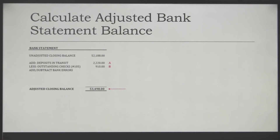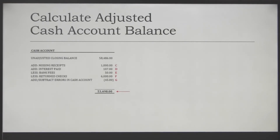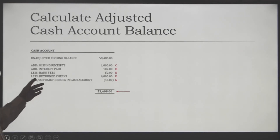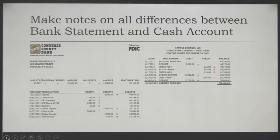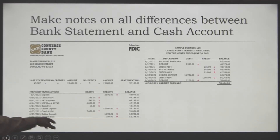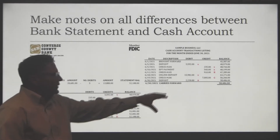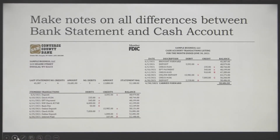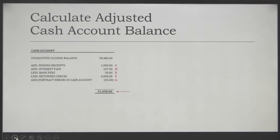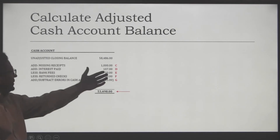Now we're going to work on reconciling the cash account balance. Hopefully, when we make these adjustments, those numbers will be the same. If we go back and look at missing receipts, there was an online deposit on June 29th for $1,000 that doesn't show up in the accounting records, so we need to make that change on the cash account balance reconciliation side — we add $1,000.